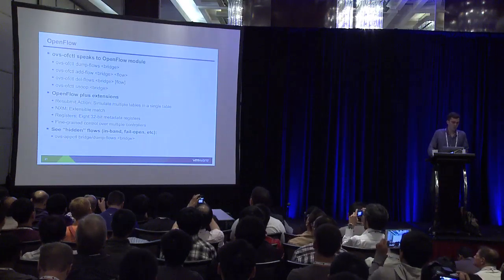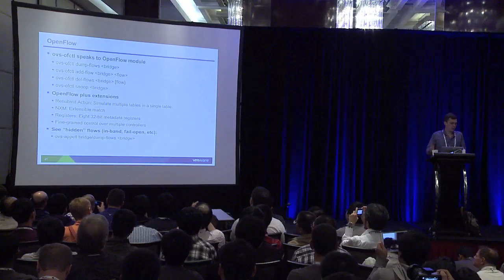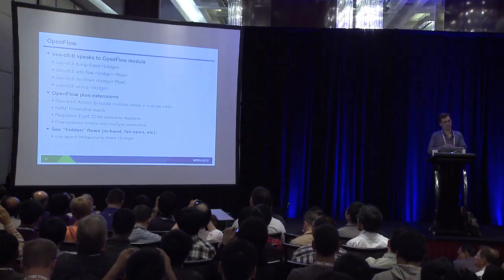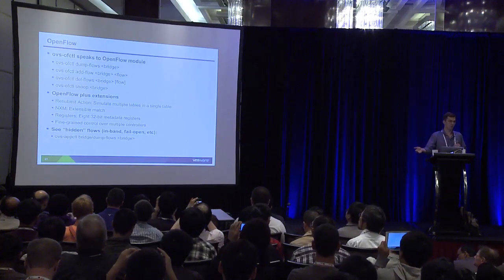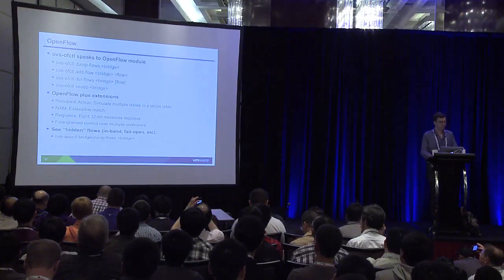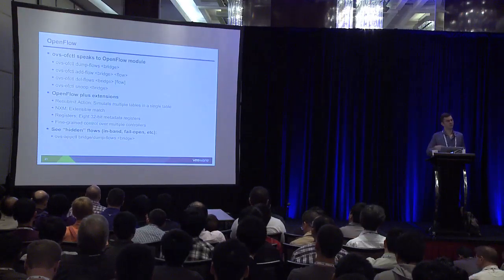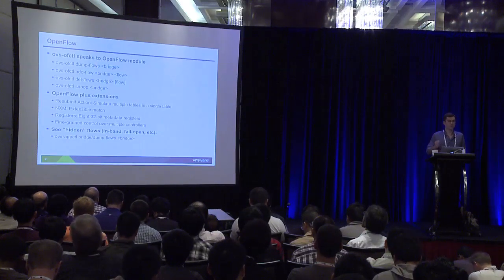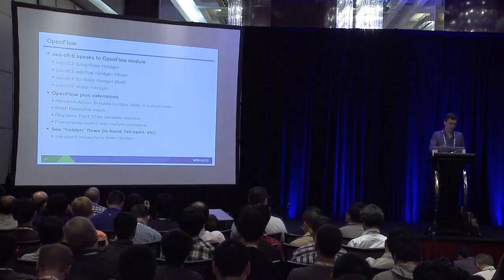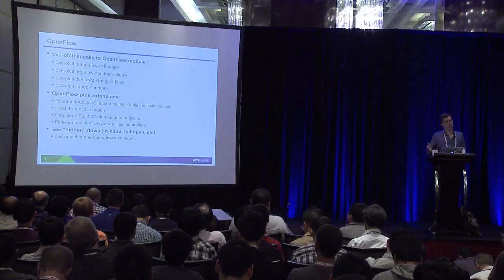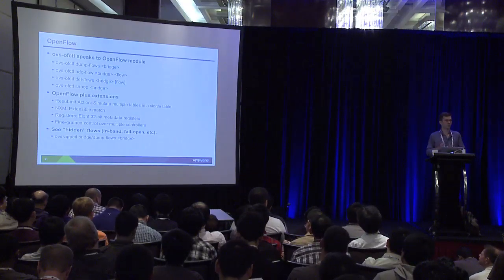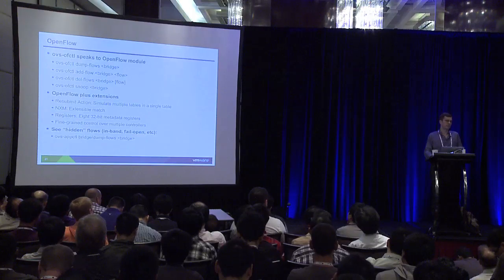For configuring OVS, there's a command called ovs-ofctl that actually speaks OpenFlow to the switch — just like ovs-vsctl spoke the OVSDB protocol, ovs-ofctl speaks the OpenFlow protocol, but just over a local socket typically. With ovs-ofctl you can dump the flow table, add a flow, delete flows, and more. We've added a number of extensions to OpenFlow. We're pretty involved in the OpenFlow process, and OVS ended up becoming sort of an incubator for new ideas — the ones that were good have been added to later versions of OpenFlow. For example, in older versions of OpenFlow there were a fixed number of fields you could match on, but we needed to match on things like the tunnel key, so we came up with an extensible match format called NXM. In version 1.2 it was adopted by the OpenFlow Networking Foundation.